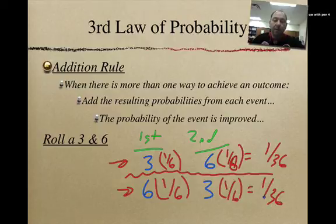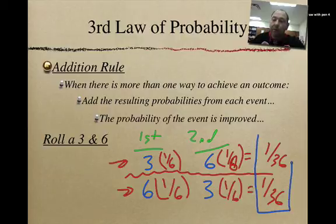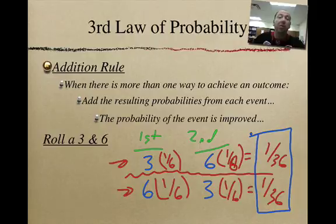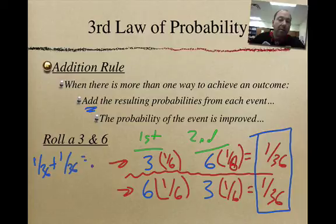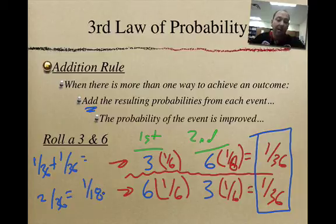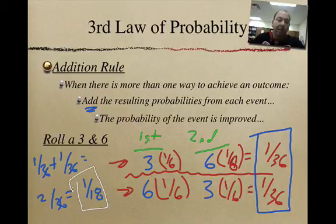Well, if you notice here, we have these two resulting probabilities. And a lot of students would go ahead and just multiply them, but that's not the case. We want to add them. All right, so if I kind of work my math over here, 1/36 plus 1/36 is going to give us 2/36. But again, as every good math student knows, we're going to reduce that down to one over 18. And this is actually the correct answer. So if you notice that the probability of rolling a three and a six is actually greater than limiting the die to be the first one to be three and the second one to be six.